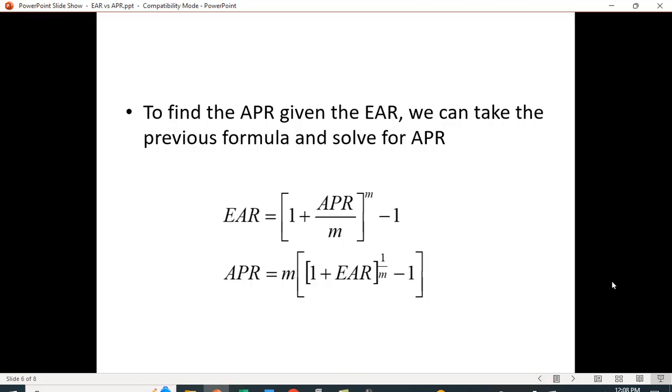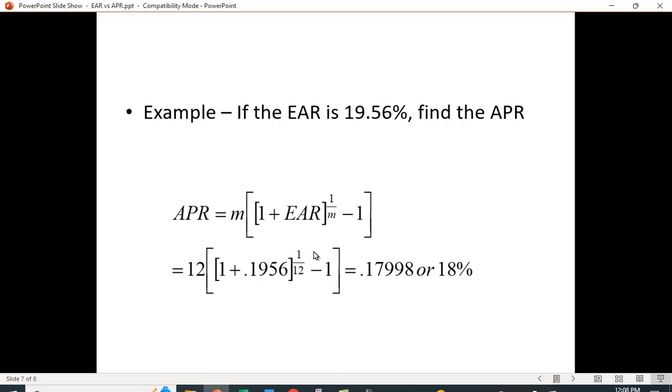And we can do this. We'll do it for the 19.56% because we know it was 18% APR, we'll just go backwards. And if you do this, 1 plus 0.1956 raised to the 1/12 power minus 1 times 12, and because it's actually not exactly 0.1956, it's 0.1956 and some decimal places, it comes out to 0.17998 or rounds off to 18%.